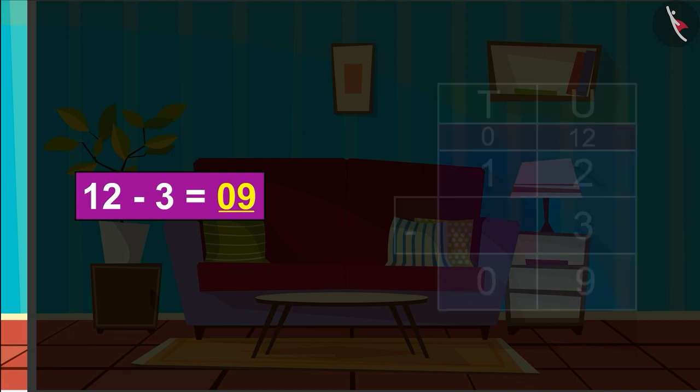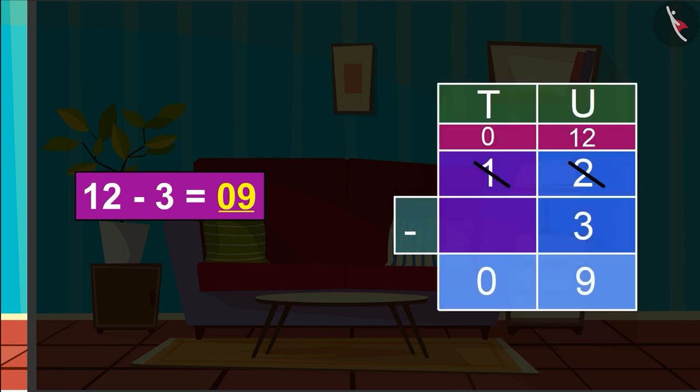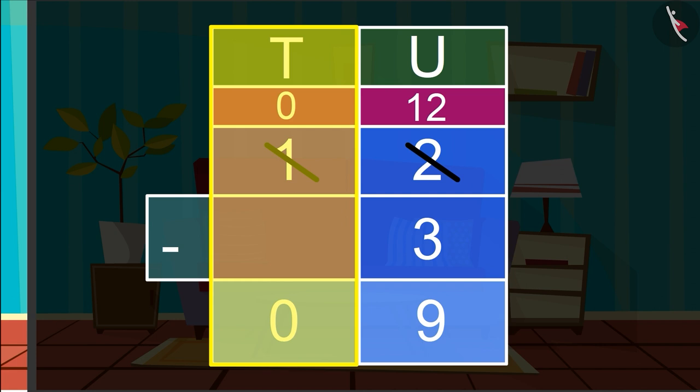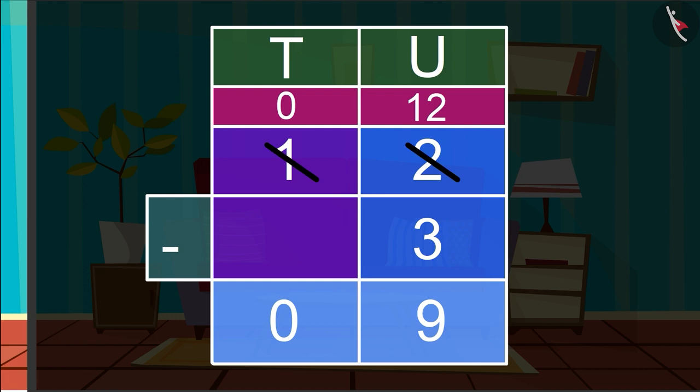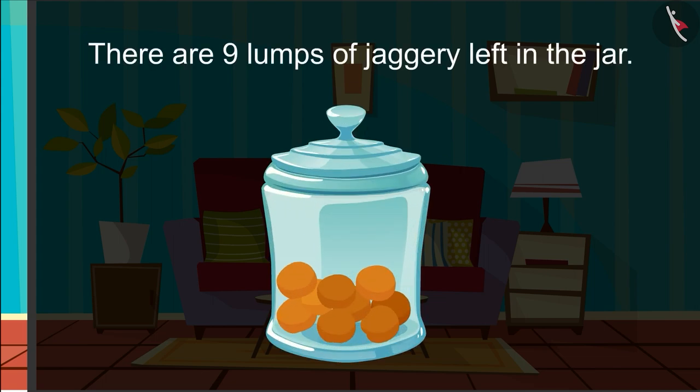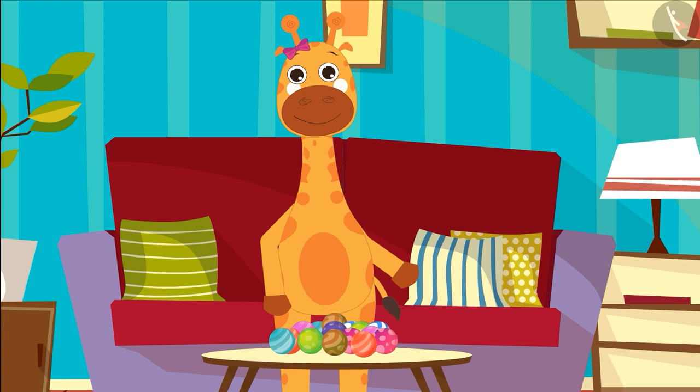Now look at the numbers in the tens place. There is no longer a number in the tens place because we borrowed one number. Hence, the answer will be 9. There are 9 lumps of jaggery left in the jar. Let's solve another similar question.